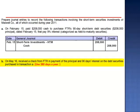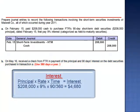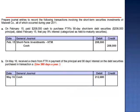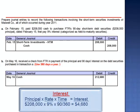Letter B: on May 16th, received a check from FTR in payment of the principal and 90 days interest on the debt securities purchased in transaction A. The amount of the interest is calculated by taking the principal, $208,000, multiplying by the interest rate, 9%, and the time factor is 90 divided by 360. The maturity value — principal plus interest — is $212,680: principal of $208,000 plus $4,680 in interest.